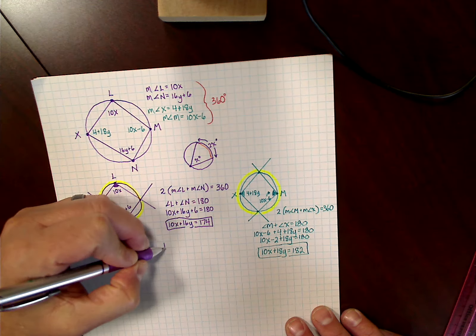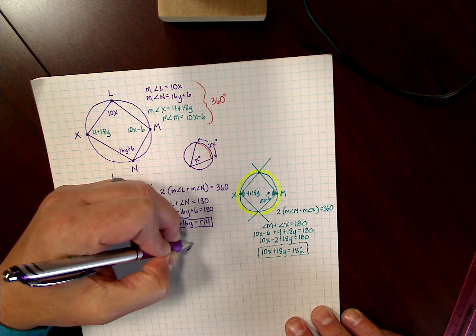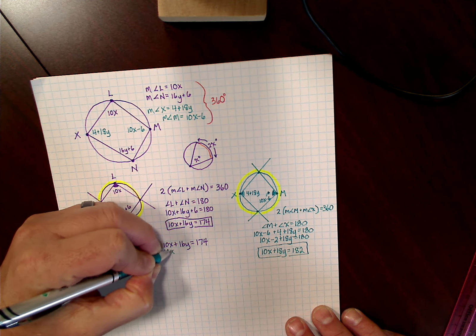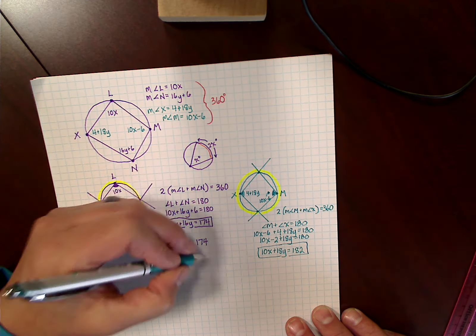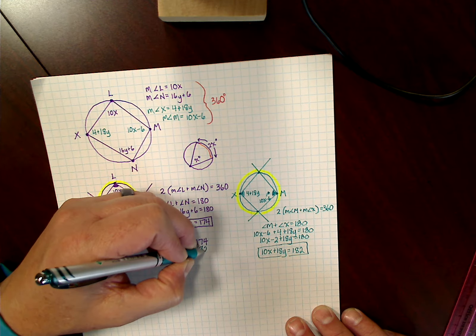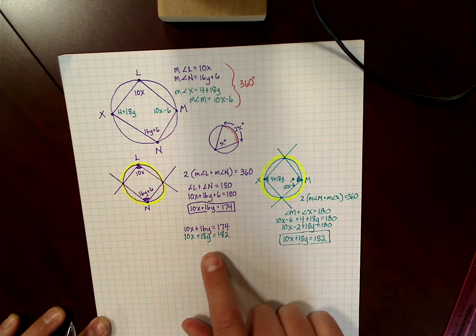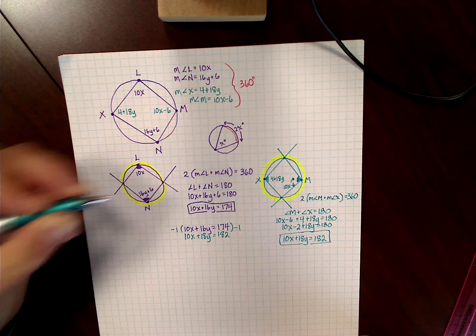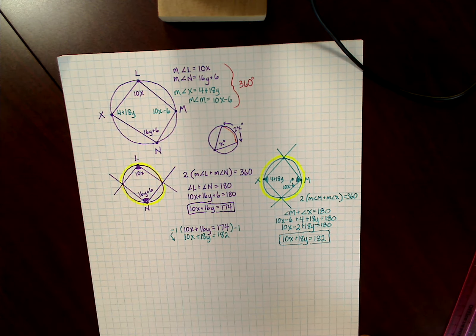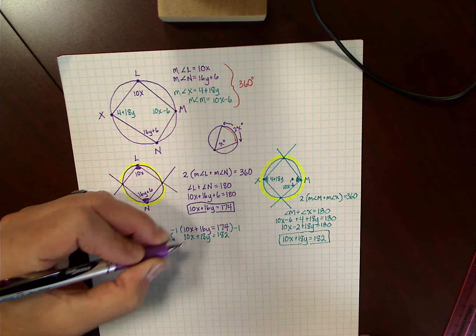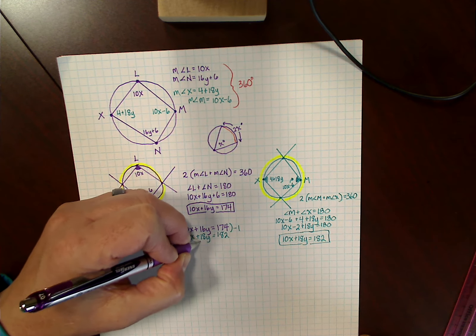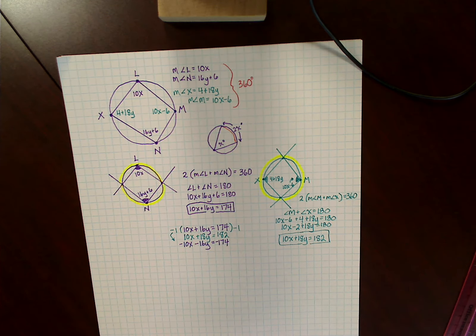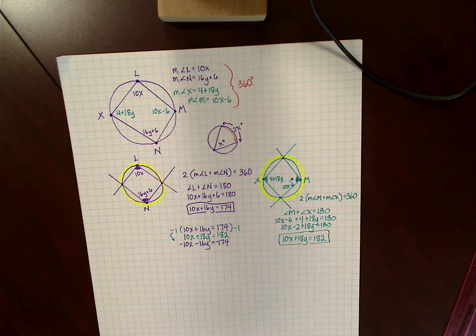Then I can rewrite those equations: 10x plus 16y equals 174, combined with 10x plus 18y equals 182. Standard form of an equation with systems. So I'm just going to multiply this top equation by negative 1 on both sides. That allows me to change the original equation, the purple equation, to negative 10x minus 16y equals negative 174.